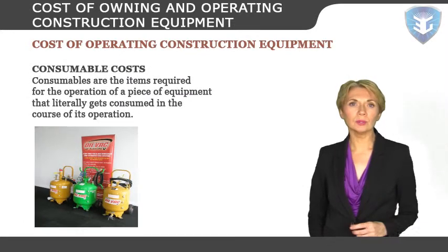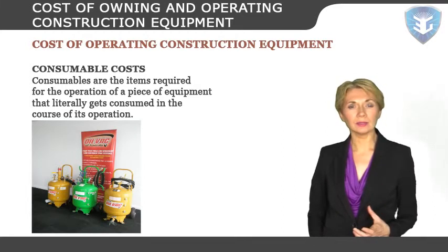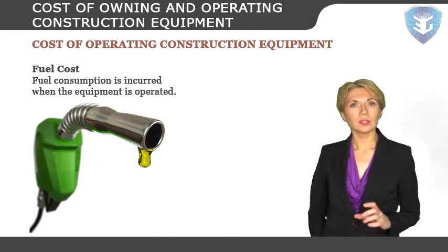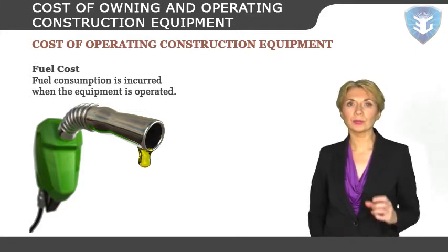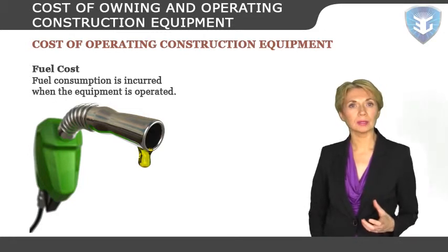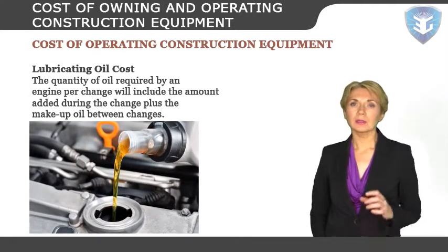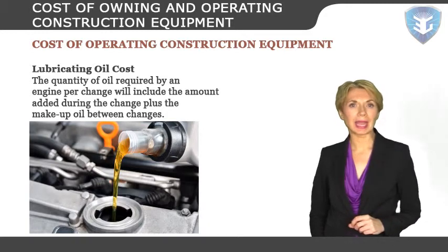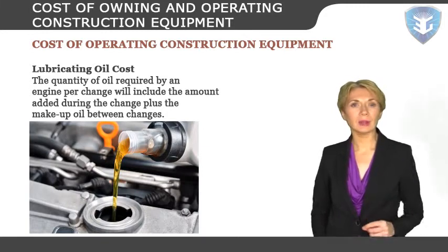Consumables are items required for the operation of a piece of equipment that get consumed in the course of its operation, including fuel, lubricants, and other petroleum products. When operating under standard conditions, a gasoline engine will consume approximately 0.06 gallons of fuel per flywheel horsepower hour, while a diesel engine will consume approximately 0.04 gallons per flywheel horsepower hour. Lubricating oil quantity will vary with engine size, crankcase capacity, condition of piston rings, and number of hours between oil changes.